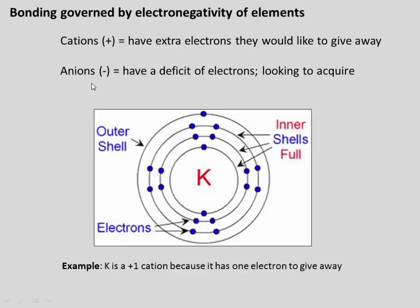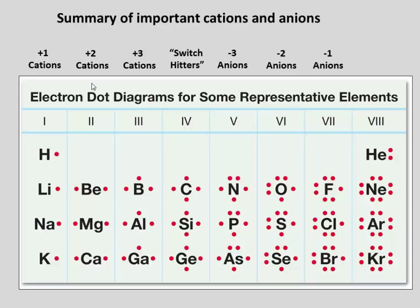This chart is called an electron dot diagram. It shows a summary of important cations and anions, with a chemical symbol and dots indicating how many extra electrons are in the outer orbital shell. For example, sodium has one dot — it's a +1 cation wanting to give away one unit of charge. Magnesium has two dots — it's a +2 cation, a more powerful cation than sodium. On the other side, oxygen is missing two electrons and is desperate to get them, whereas fluorine is only missing one.